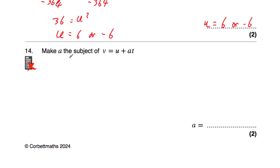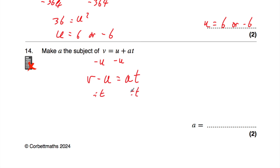Question number 14: we've been asked to make a the subject of v equals u plus at. We want to get a on its own. So let's take away u from both sides — v subtract u equals at. Now divide by t on both sides: on the left we have v subtract u divided by t, and on the right we're just left with a. So a equals v subtract u over t, and we've made a the subject.